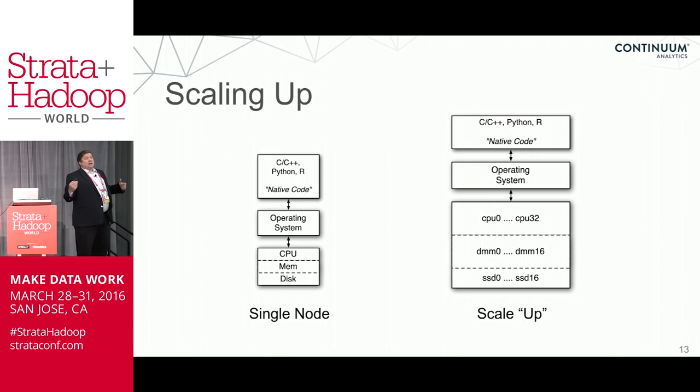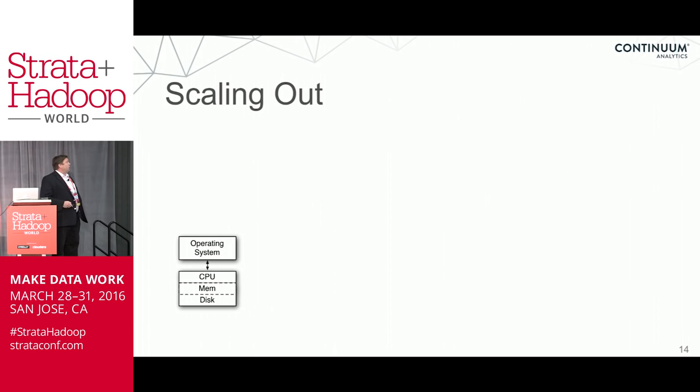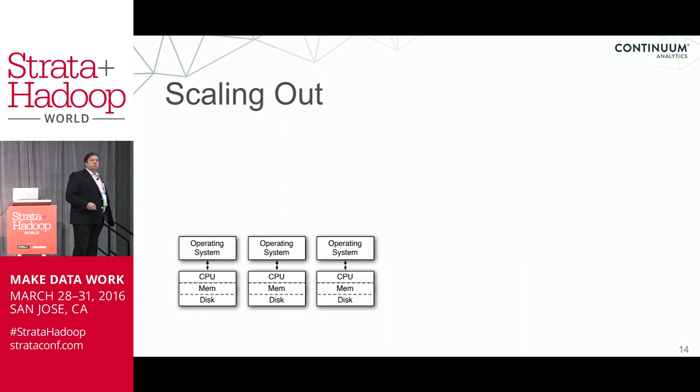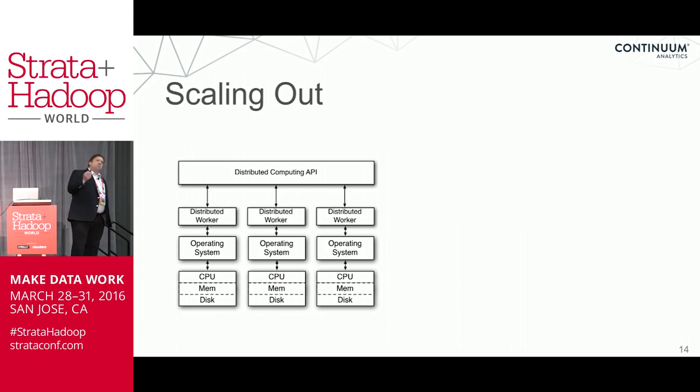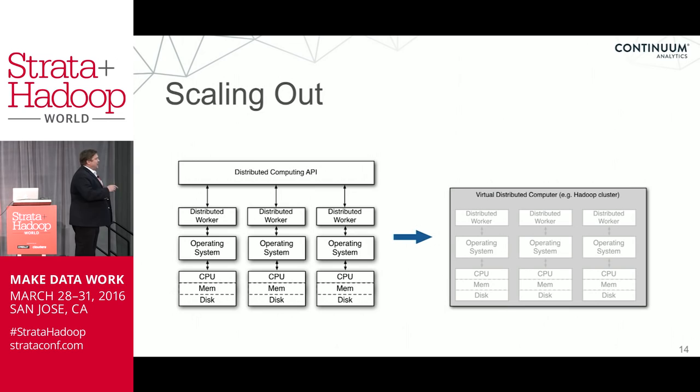Scaling up is about typical programming — you have a CPU, memory, a disk, and an operating system on top. When you scale up, you expand the CPU, memory, and disk, but the operating system is still how you talk to it. The same code you used to write still works — all the tools you're used to using in Python and R just work. Scaling out is a little different: you take the same CPU-memory-disk and just make more of them, each with an operating system. You have to put a worker on each one, and then there's a distributed computing API that you end up talking to. That switch is what makes the programming model challenging.